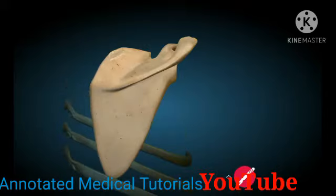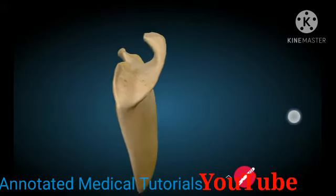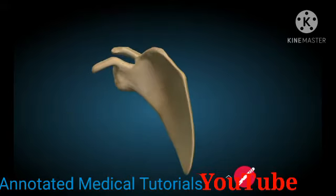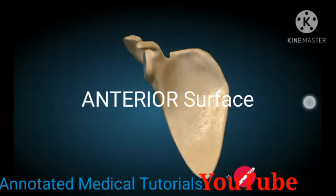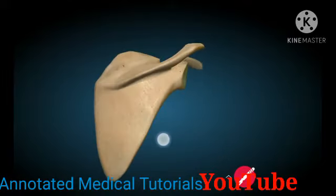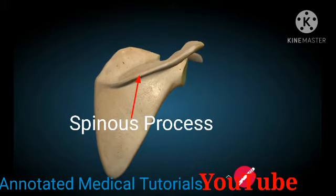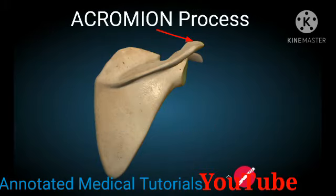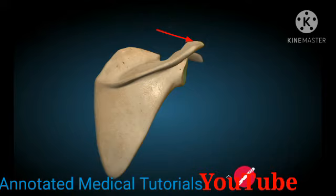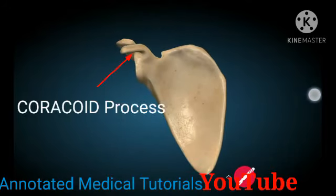Now it's time for us to look at the surfaces. The scapula has got two surfaces: the posterior surface and the anterior surface. It also has got three processes, which are the spinous process, which ends up being the acromion process, and on the other side we have got the coracoid process.